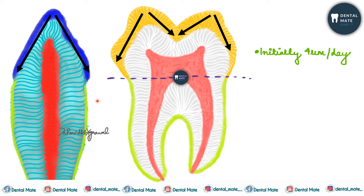Dentine formation initially occurs at a rate of 4 micrometers per day. It continues until the crown is formed and the teeth erupt and move into occlusion.